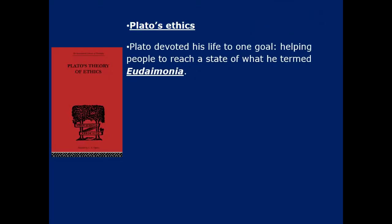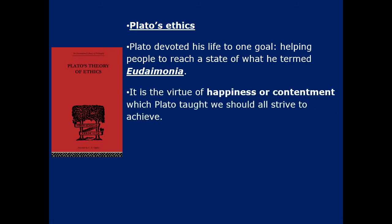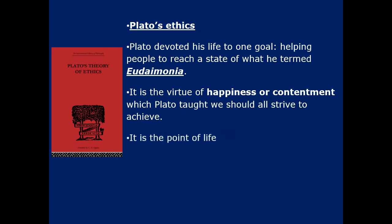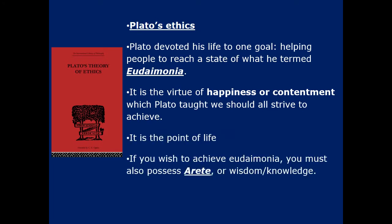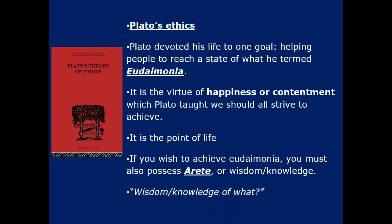Ethics is how you should act. Plato said our goal should be to reach the state of eudaimonia — where you are content, the goal of life. If you wish to achieve this, the meaning of life is eudaimonia. To achieve it, you need something called arete, which is wisdom, which is knowledge. Wisdom and knowledge of what would be the question, and we will talk about that in a little bit.